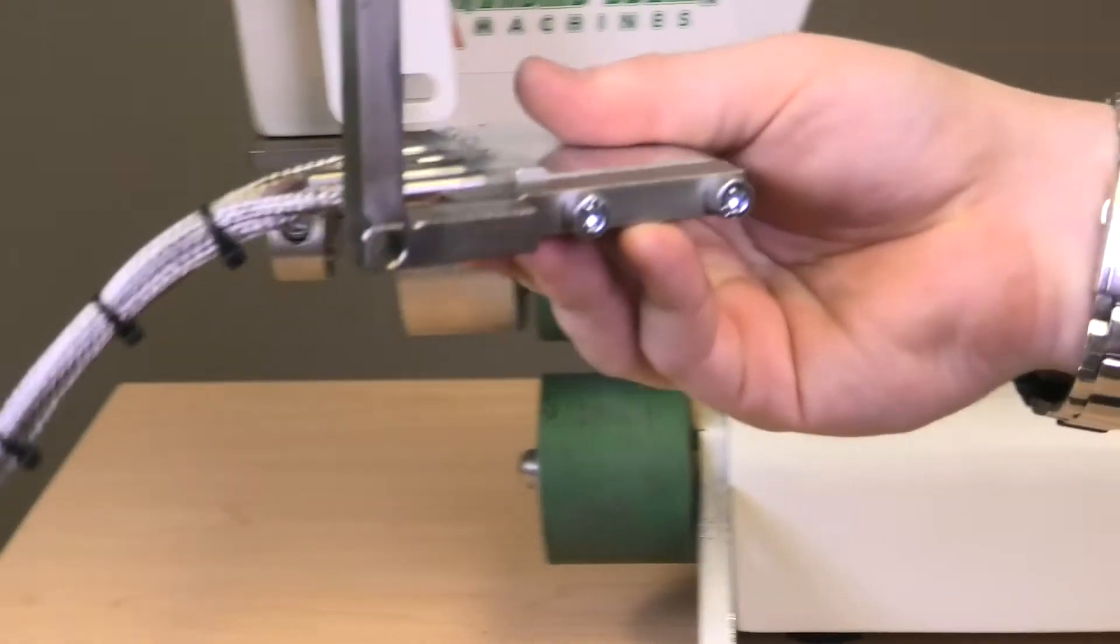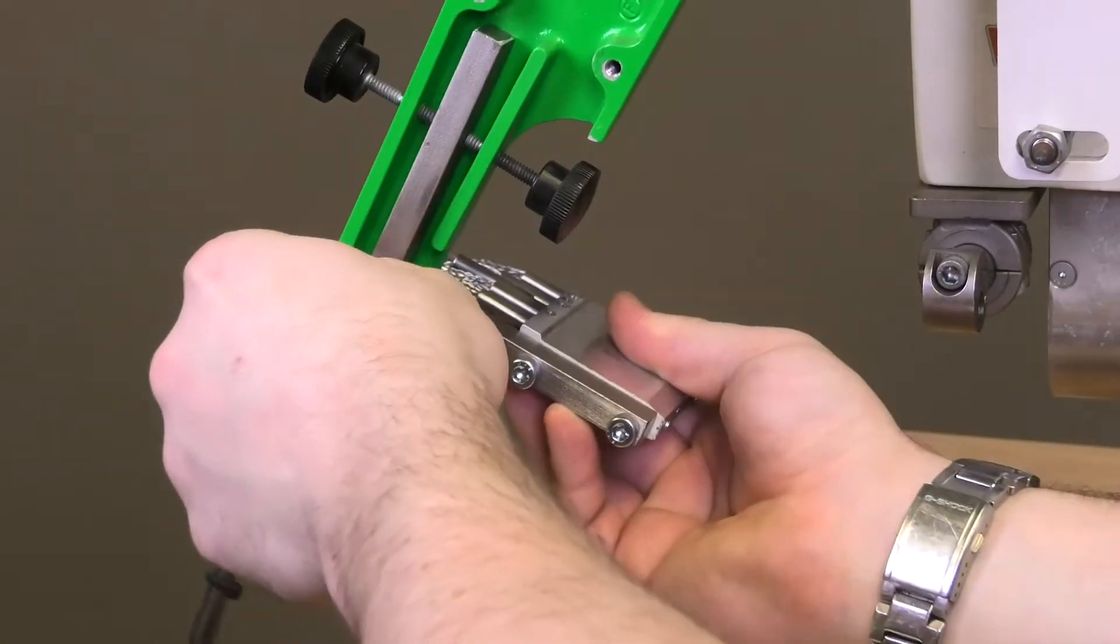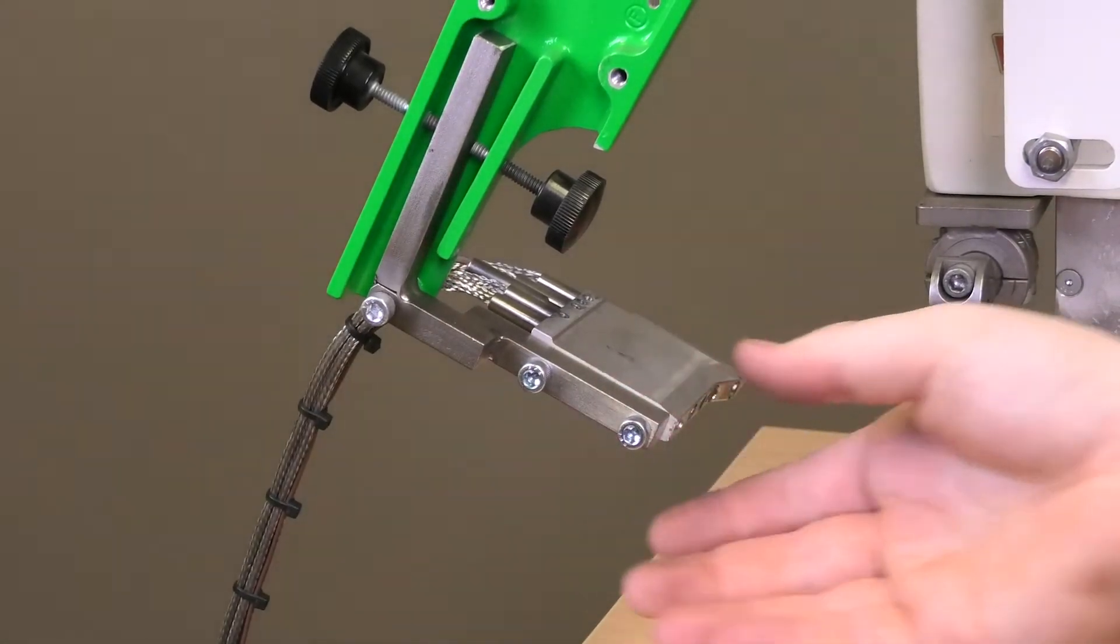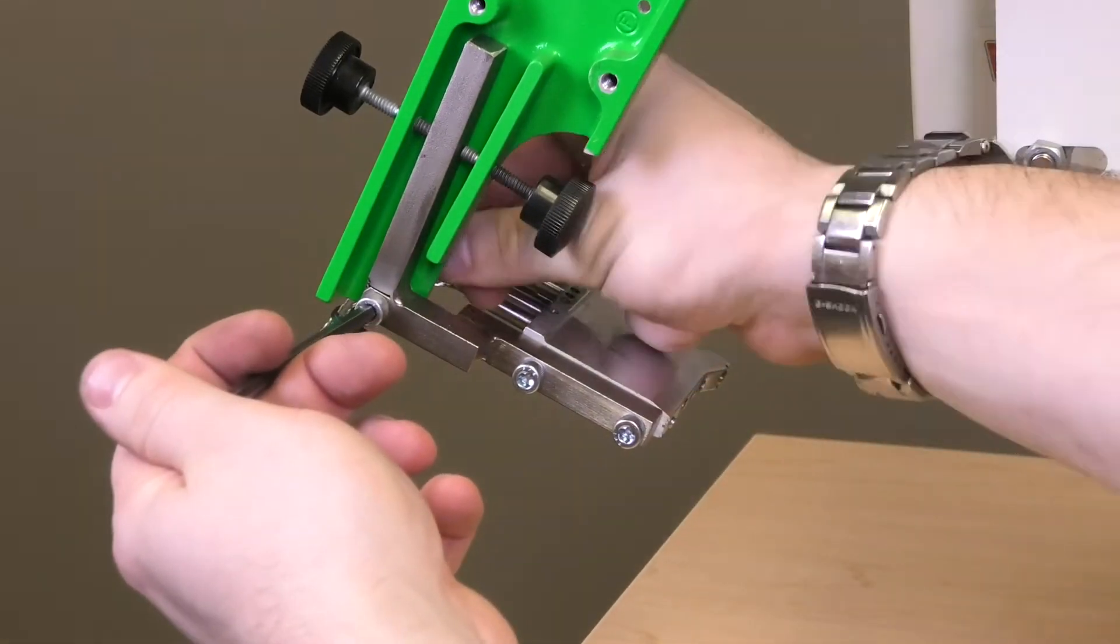We'll grab our new wedge, place the bolt inside, start screwing that on, snug that bolt down, and grab your wrench again.